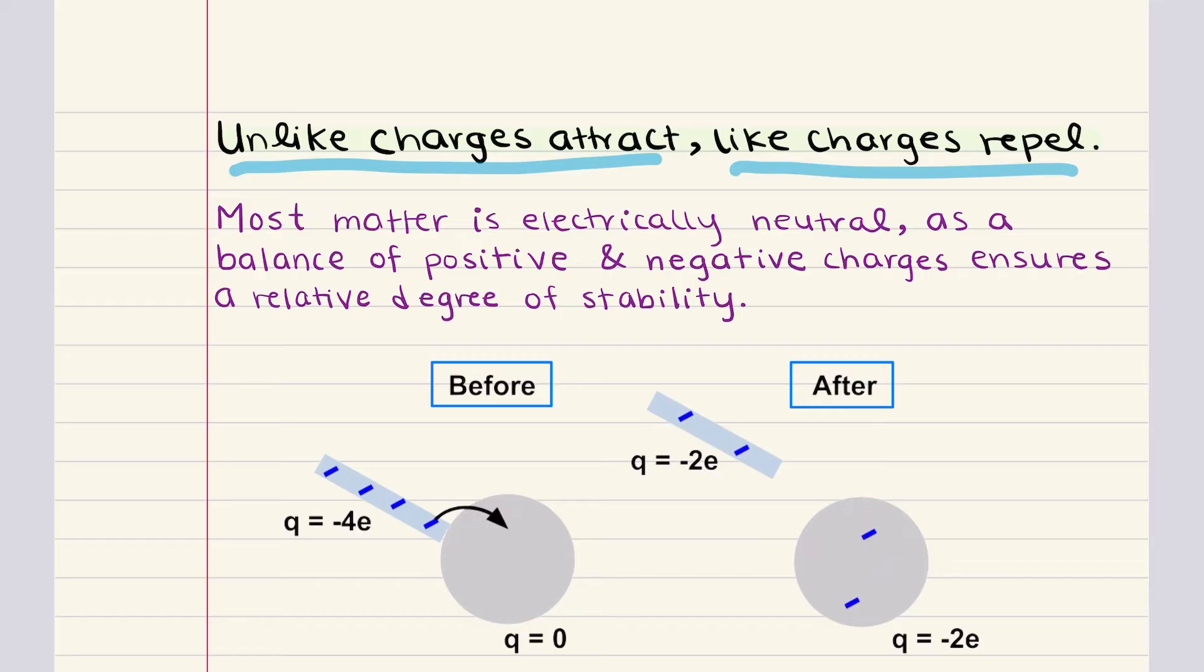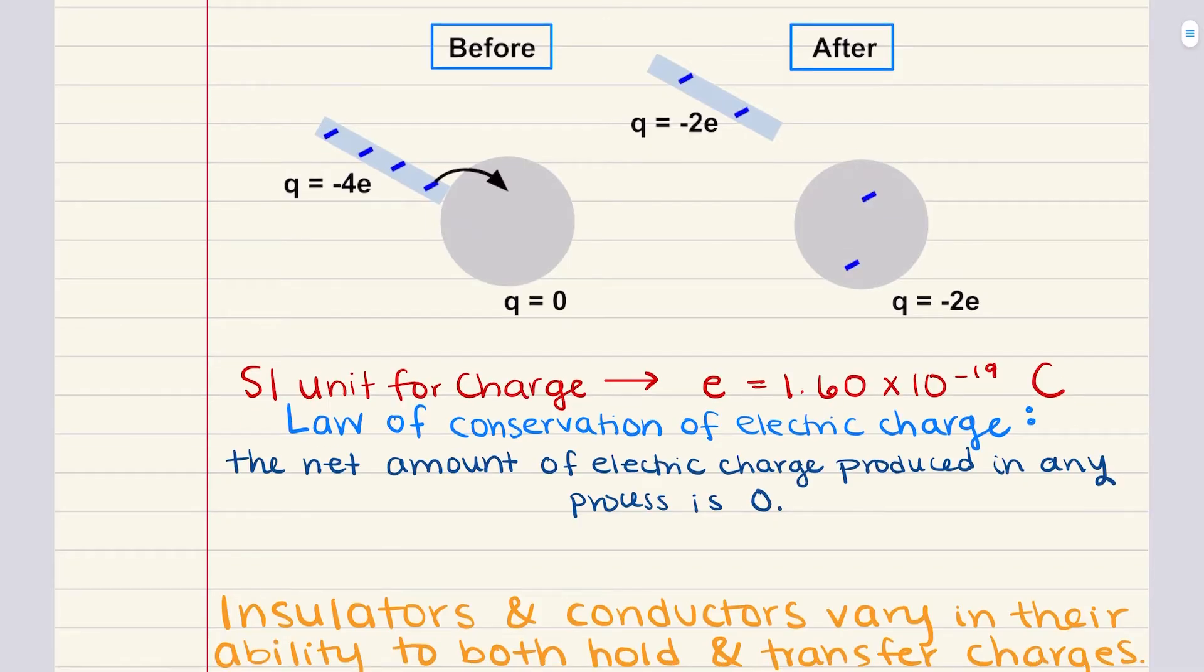It's important to note that charges don't remain isolated. They can be transferred from one object to another. And this leads us to the concept of charge conservation. The law of conservation of electric charge states that in any isolated system, the total amount of charge remains constant over time.